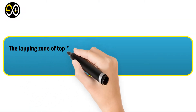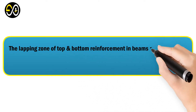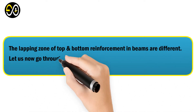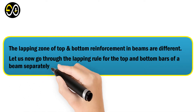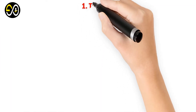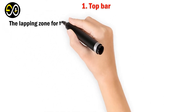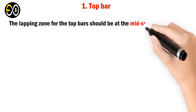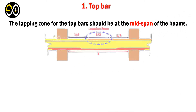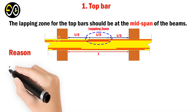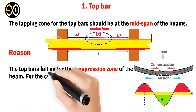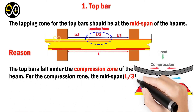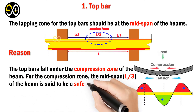The lapping zones for top and bottom reinforcement in beams are different. Let us go through the lapping rules for top and bottom bars separately. For top bars, the lapping zone should be at the mid-span of the beam. The reason is that the top bars fall under the compression zone of the beam, and the mid-span is considered a safe zone for lapping in the compression zone.